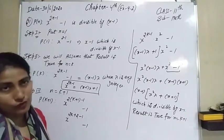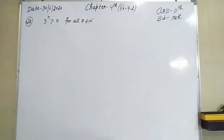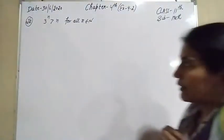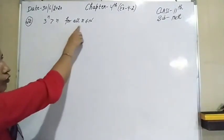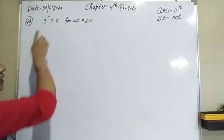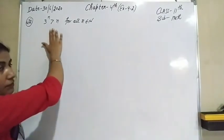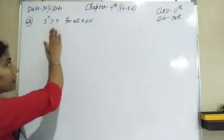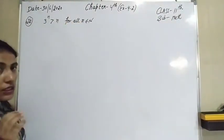Now come to the next portion of this worksheet. Again by the Principle of Mathematical Induction, we have to prove that 3 raised to the power n is greater than n for all n belonging to natural numbers. Here we have an inequality, and we have to prove this inequality is true for all n belonging to natural numbers.